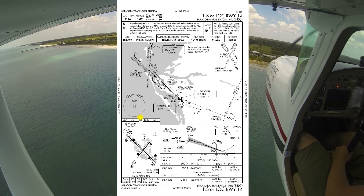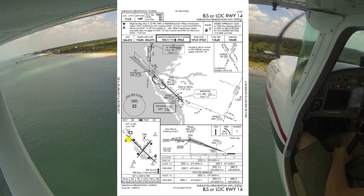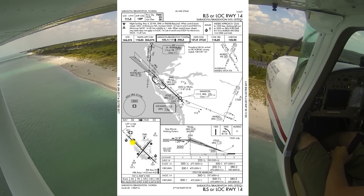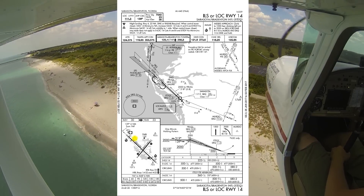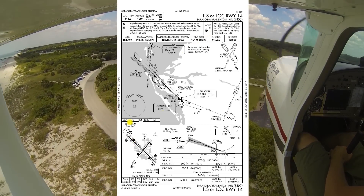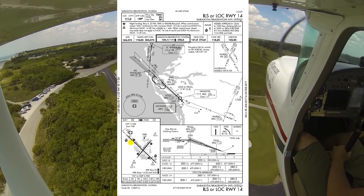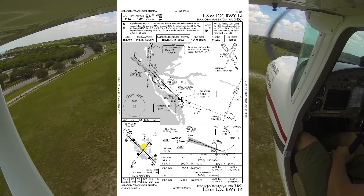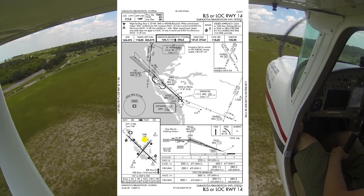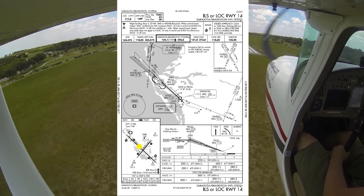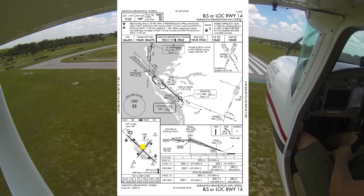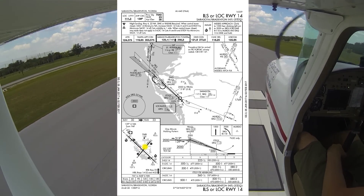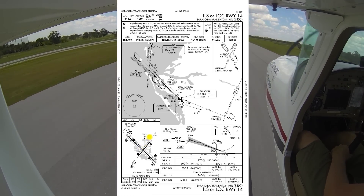Assuming we do land on runway 14, we'll be looking for PAPIs on the left, and there's a displaced threshold of quite a bit there. We've got MALSF lights to guide us in, and we'll expect a left turn — say we're going over to the northeast corner there. We'll expect a left turn off, and we'd pull up our taxiway diagram at this point and say, hey, maybe it's going to be Charlie, Hotel, Fox to the ramp.